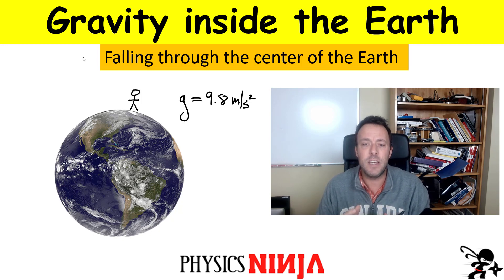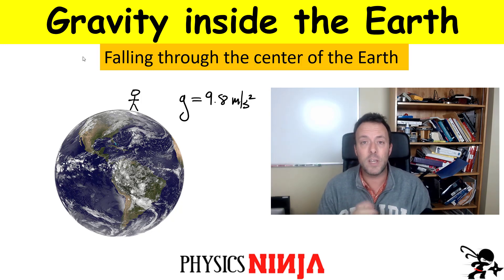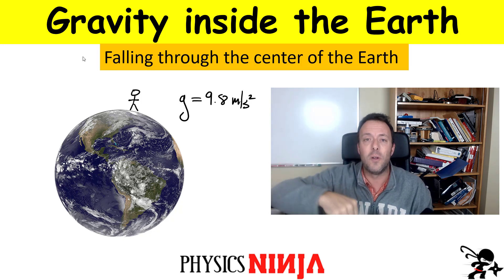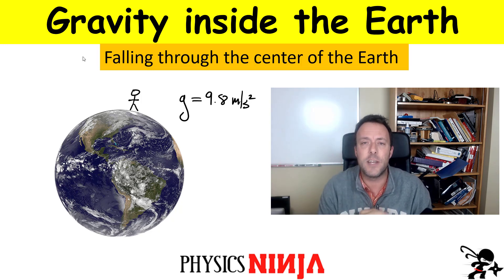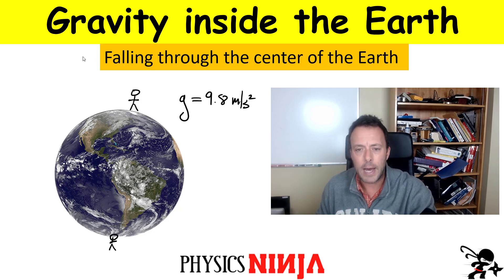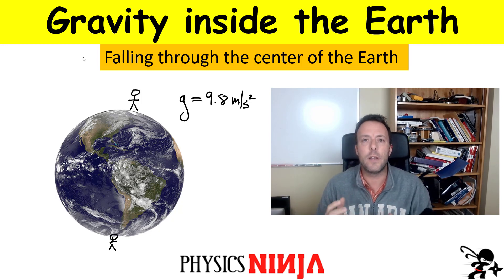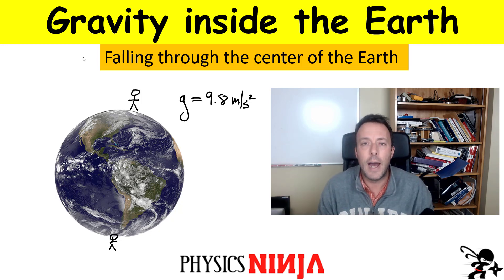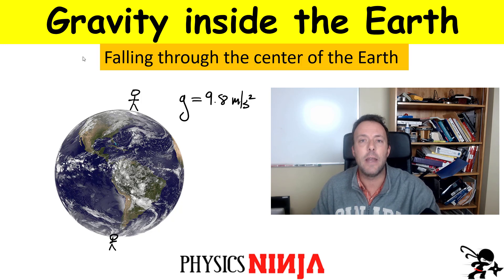Now what happens if you wanted to go through the Earth? One way of doing it would be to dig a hole right through the center of the Earth if I wanted to travel all the way to the other side. What would happen to little g at that point? It's no longer 9.8 because I'm no longer on the surface of the Earth. How can I calculate little g if I'm somewhere inside? This is what we're going to do now.